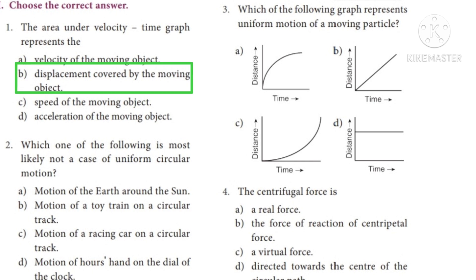Second question: Which one of the following is most likely not a case of uniform circular motion? Option A: motion of the earth around the sun. Option B: motion of your toy train on a circular track. Option C: motion of your racing car on a circular track. Option D: motion of our hand on the dial of the clock. The correct answer is Option C — motion of a racing car on a circular track.